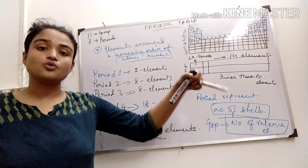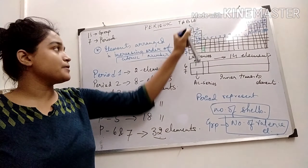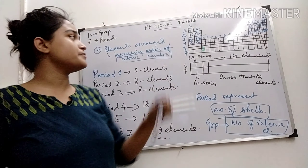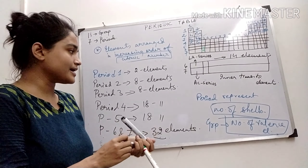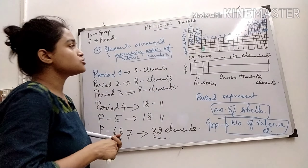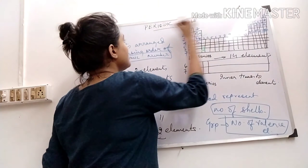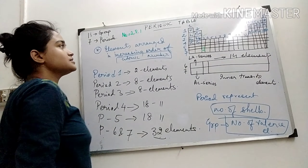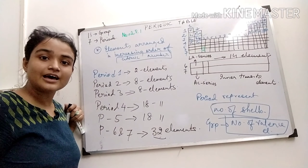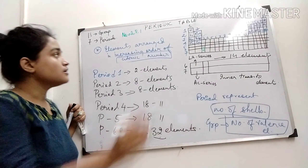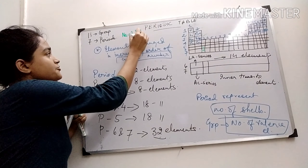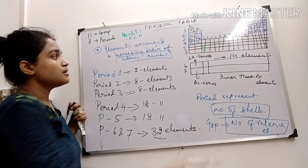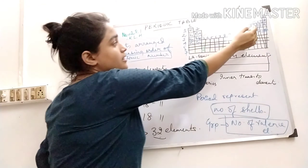Elements which have 2 shells are present in the second period. Elements which have 3 shells are present in the third period — like sodium. Sodium has atomic number 11 with configuration 2, 8, 1, so shells K, L, M — 3 shells are present, so it is in the third period.